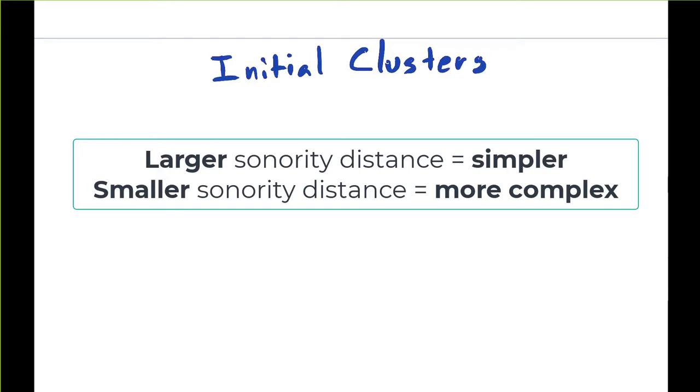A smaller sonority distance generally relates to a more complex cluster, a cluster that's less common, less frequently occurring in languages around the world.